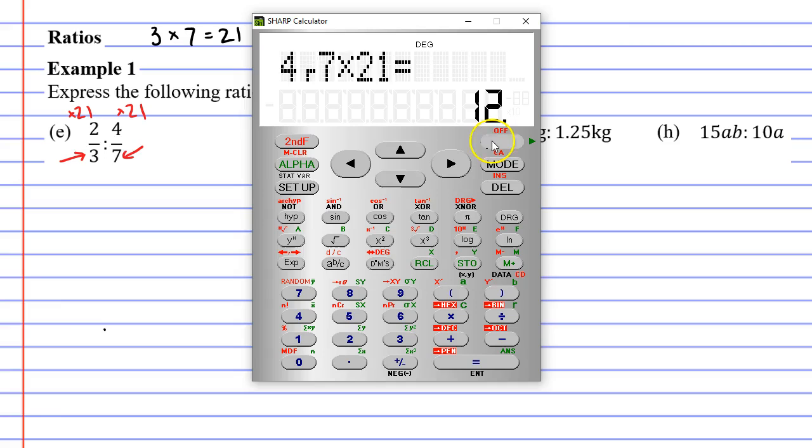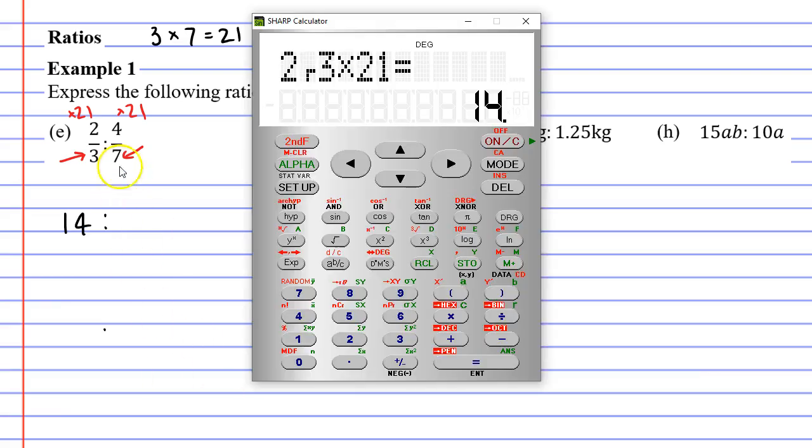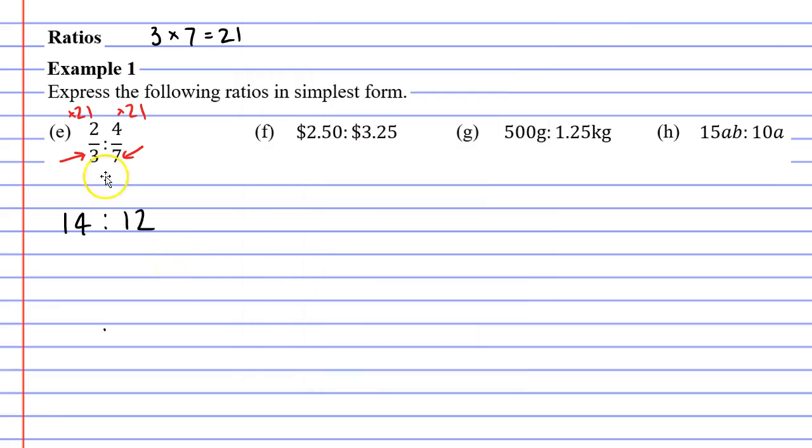So let's bring up our calculator, and we'll start with 2 thirds times 21, so 2 ABC 3 times 21 will give us 14, which is what we wanted, a nice whole number on the left-hand side. And then on the right-hand side, we have the fraction 4 over 7. 4 ABC 7 times 21. And we get 12. So we get the ratio 14 to 12.